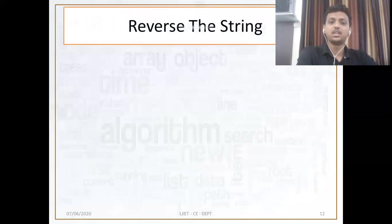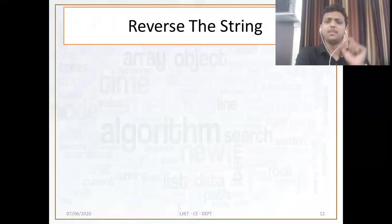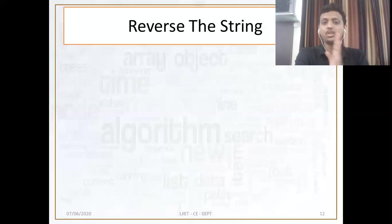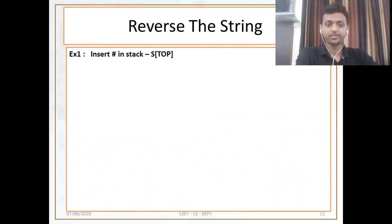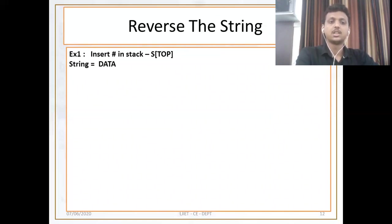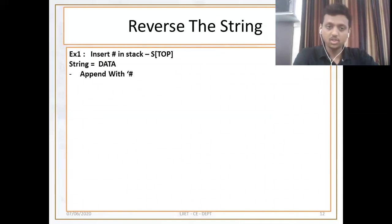The next application is reverse the string. It works similarly to decimal to binary. Whatever operations you did for decimal to binary, reversing the string works much the same. Here we have a string. Same as decimal to binary, the first step is to insert hash inside s of top. For the string: string equals data, and I append hash at the end of the string.